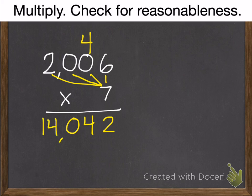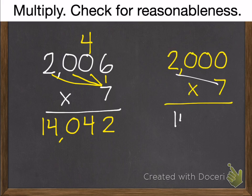Now my instructions say to check. Estimation is the easiest way, I think, to check. So I'm going to round 2,006 to 2,000. 2 times 7 is 14 with 3 zeros. And that is reasonable.